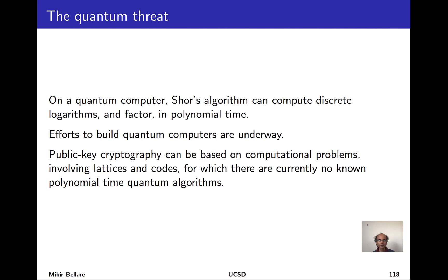One must point out the elephant in the room regarding hardness: if quantum computers could be built, Shor's algorithm can compute discrete logarithms and factor integers in polynomial time, breaking all the systems we've studied. Whether quantum computers can be built and on what timeline is not well understood, with a wide range of speculation. Nonetheless, cryptographers try to be prepared: there are choices of computational problems based on lattices and codes for which there are currently no known polynomial time quantum algorithms.